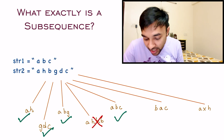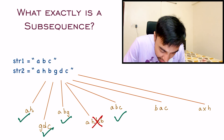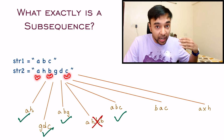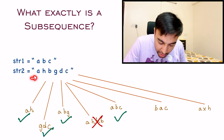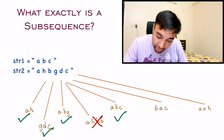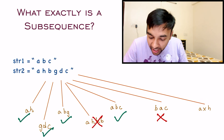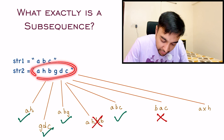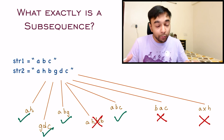Looking at the string 'BAC' — B, A, and C are all present, but the order is different. You have B first, whereas in the original string A appears first. So this will not be a valid subsequence. Finally, for the string 'AXH' — you cannot find X anywhere in the original string, so this is also not a valid subsequence.